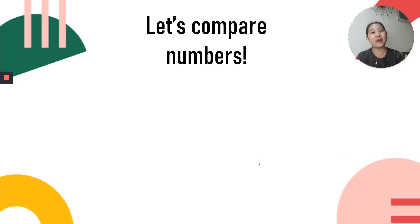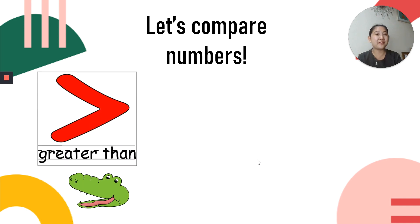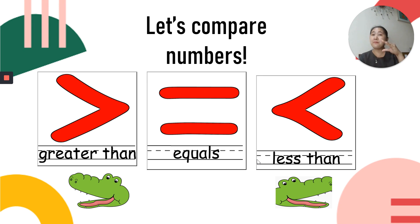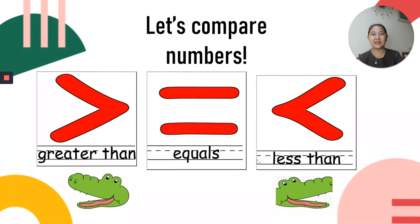Now let's try to compare numbers. Do you still remember Mr. Alligator? Very good. And what symbols do we use for comparing numbers? Yes, we use greater than, less than, and equal sign. Remember, the mouth of Mr. Alligator is facing towards the bigger amount. And then, less than. And then, if they're the same, we use equal sign. Very good.